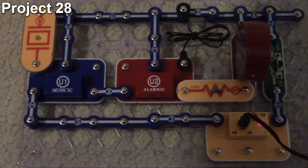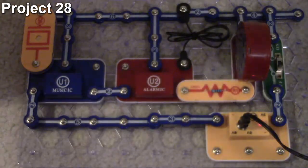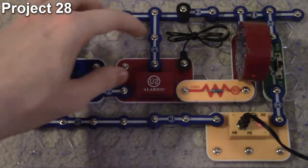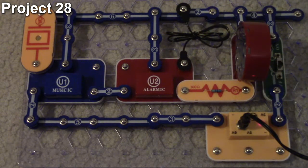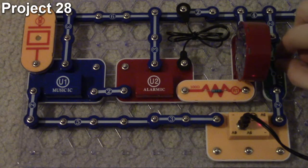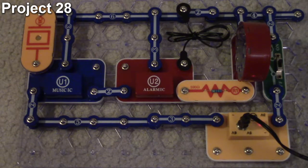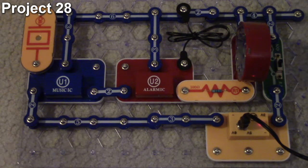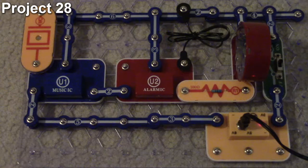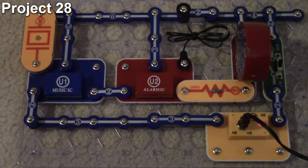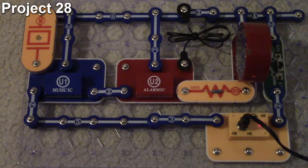Here we are with project number 28, and there's more clap sounds. The objective here is to change the sound around by putting our black jumper wire across that connection into our third point on the alarm IC. I'm going to turn this on. And it says it's supposed to sound like a machine gun. And that's how project number 28 works, so let's move on to project 29.